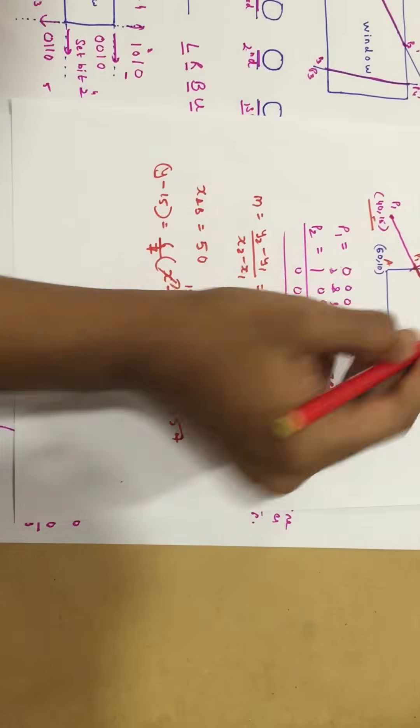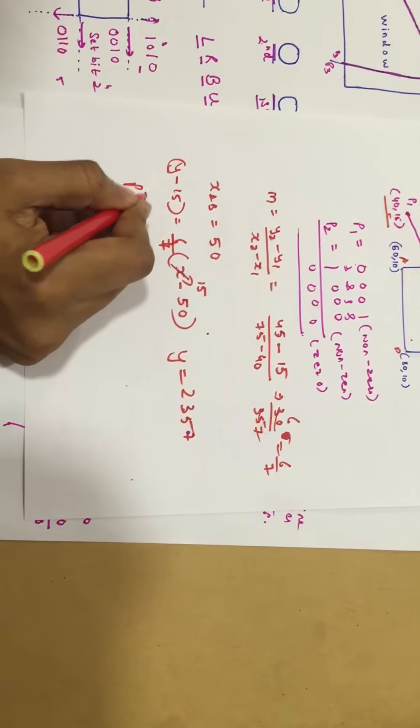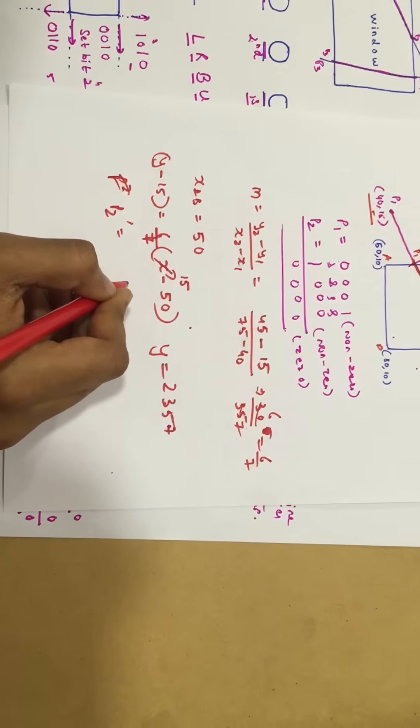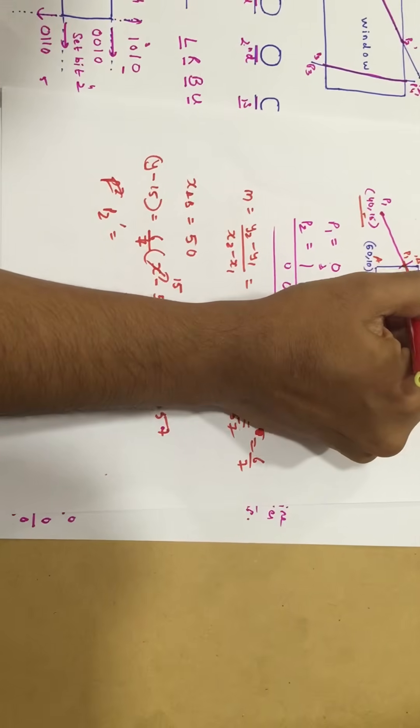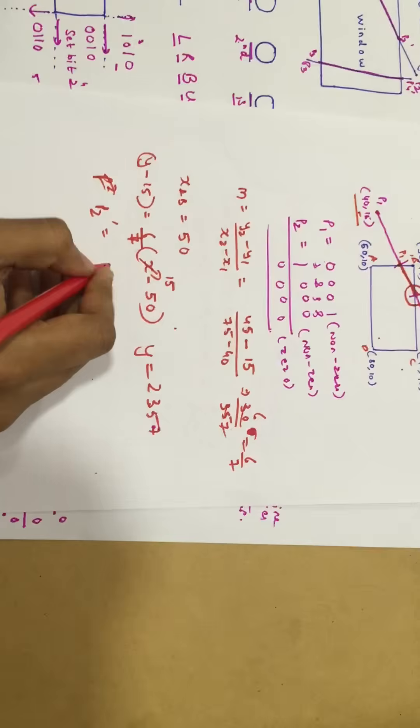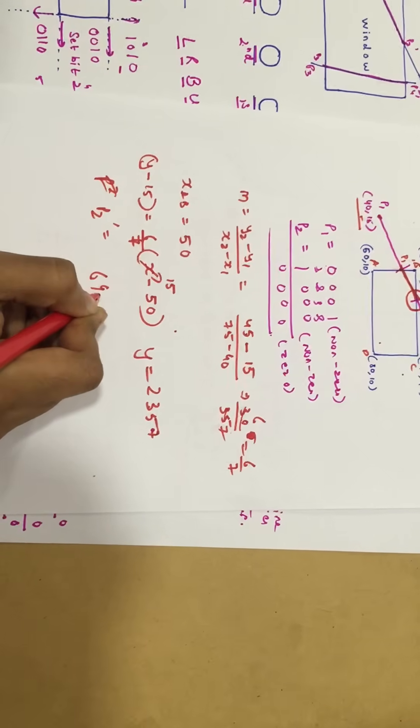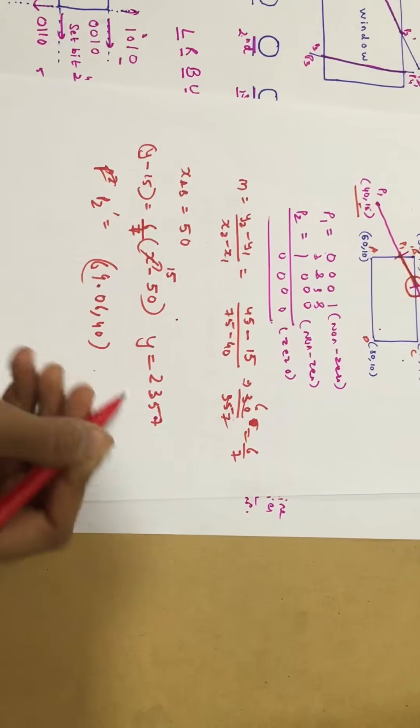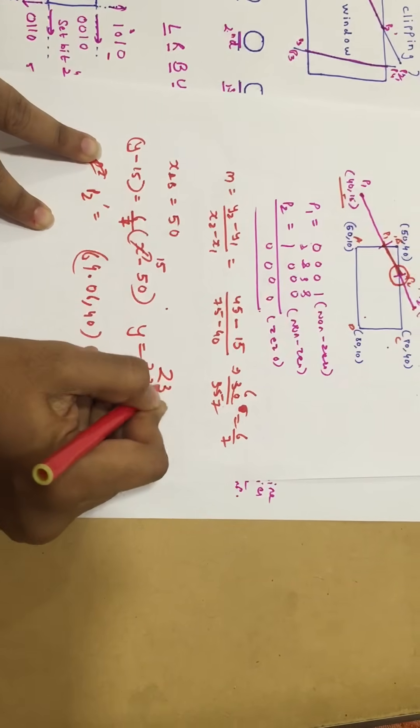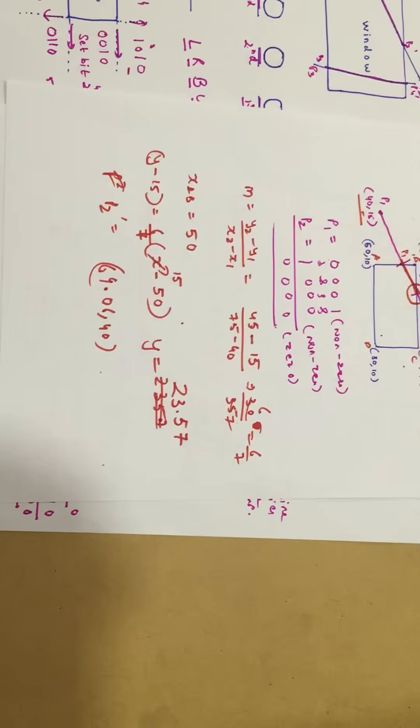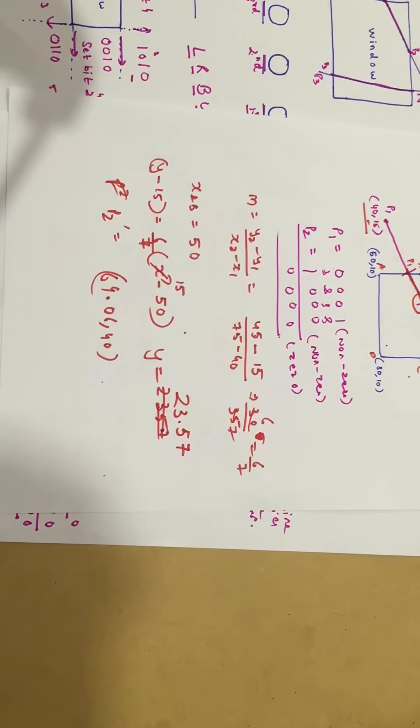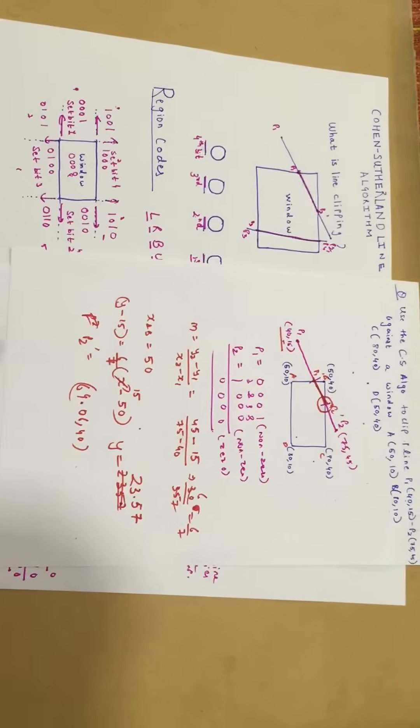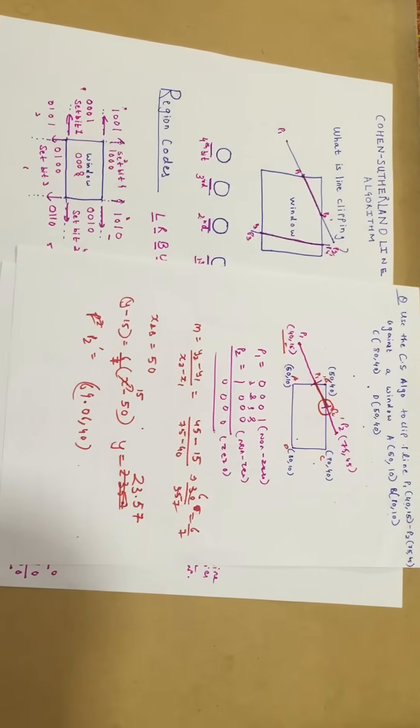Similarly, you can find the point P2 dash in the same manner. This is how you solve it, and I hope you guys understood it. If you understood it, please give it a like and do subscribe. Thank you.